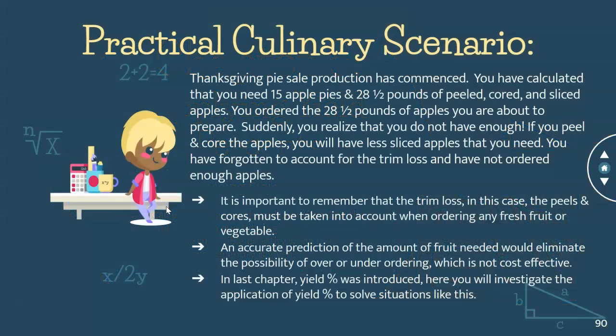Here is a scenario where you would use yield percent. The Thanksgiving pie sale production has commenced, and you have calculated that you need 15 apple pies. To make those pies, you need 28.5 pounds of peeled, cored, and sliced apples. You order exactly 28.5 pounds, but when you're about to prepare them, you realize you do not have enough — peeling and coring will leave you with less sliced apples than you need. You forgot to account for trim loss and did not order enough.